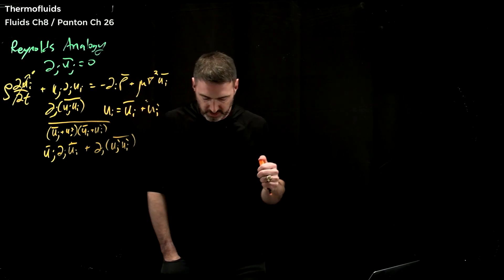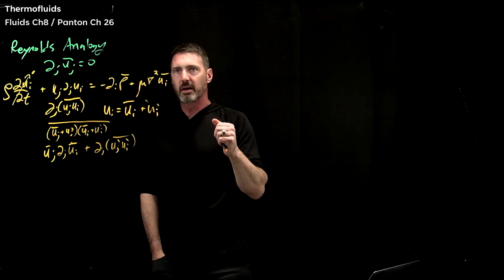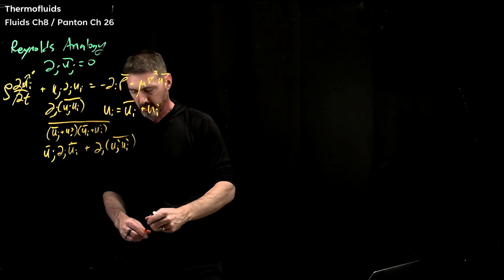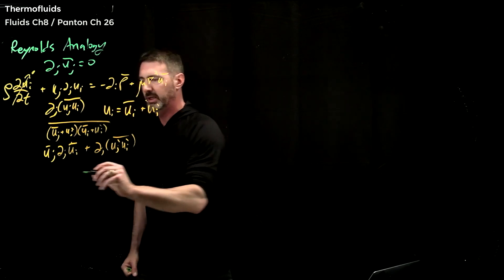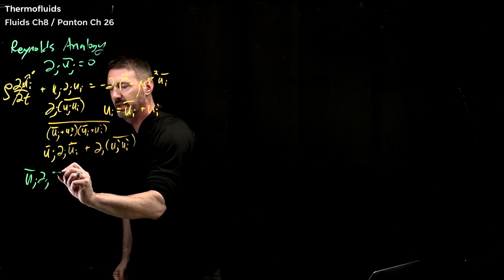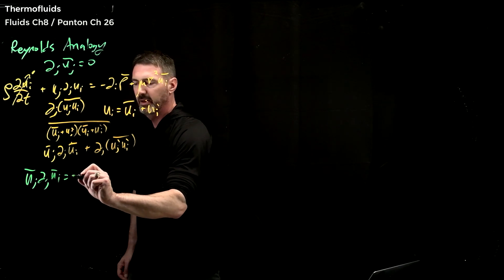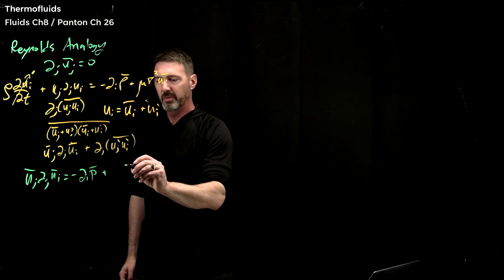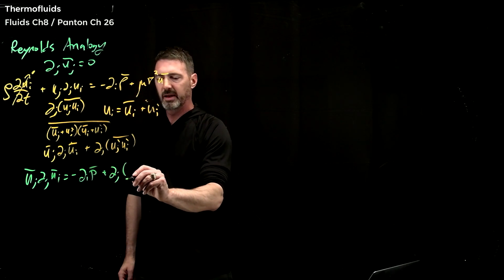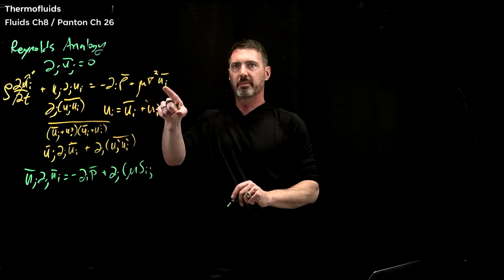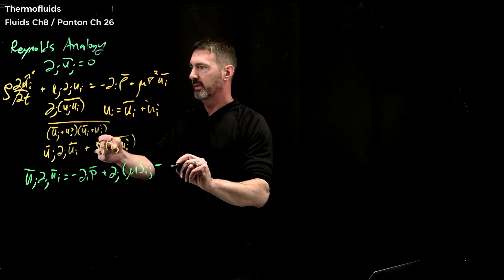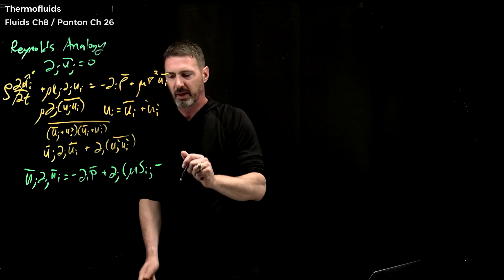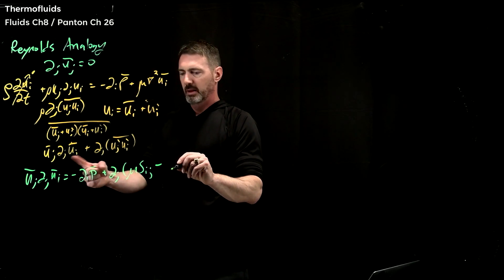The Reynolds stress term pops to the other side of the equation. Writing the full equation again with all the work done: there's no time rate of change — you have the average velocity uj convecting the i-th velocity, equal to the negative derivative of the average pressure. Then we stuff in mu times sij for the viscosity term, and then you get a density term out front — density times del_j of uj-prime ui-prime averaged.